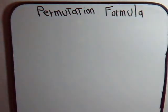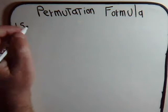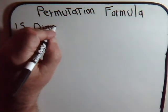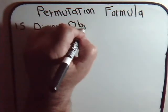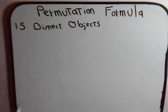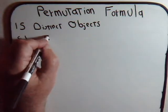Okay. What we want to do in this video is consider this kind of a problem. Say that we have 15 distinct objects, and out of that 15 distinct objects we're going to select, say, 4 objects.